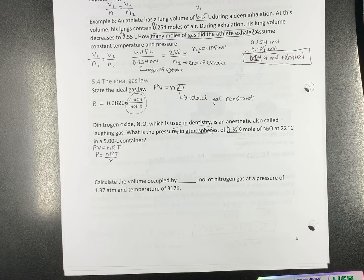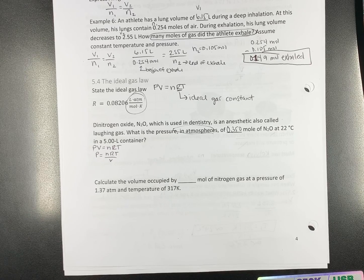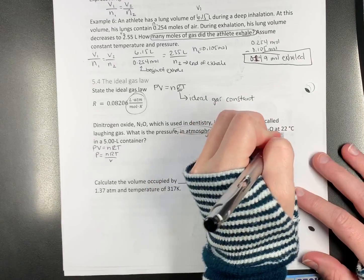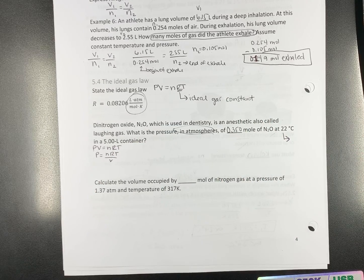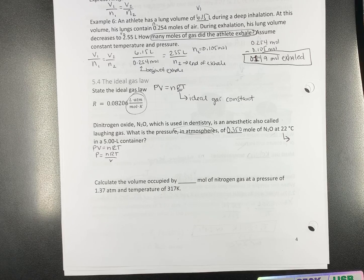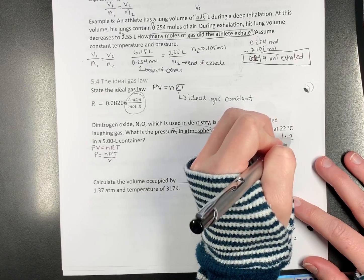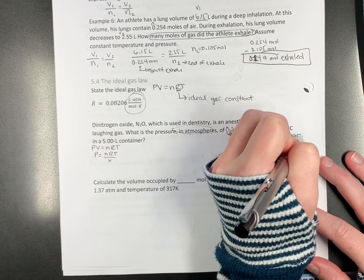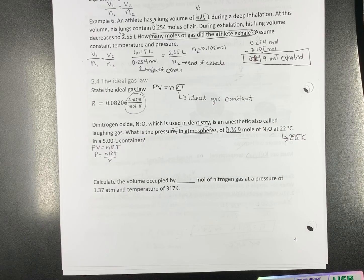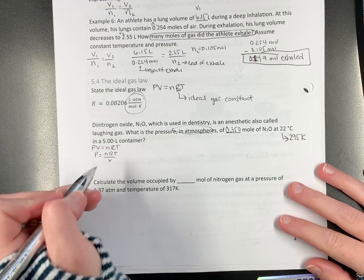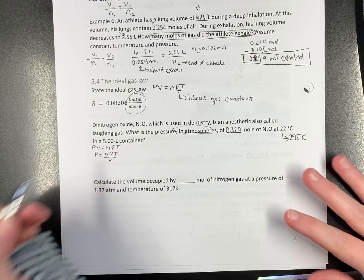Convert Celsius to Kelvin. So, let's add 273. And that gets us 295 Kelvin.